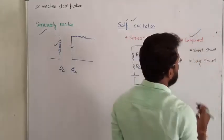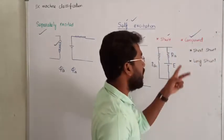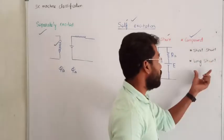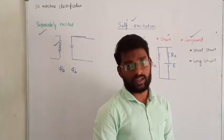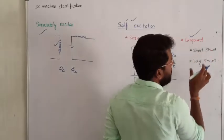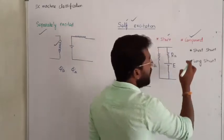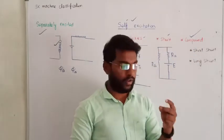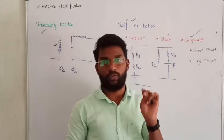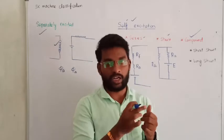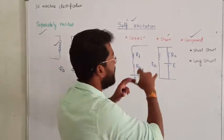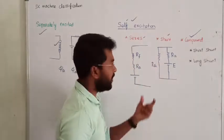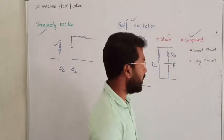Apart from this, we have one more winding that is called compound. Under compound, we have two types: short-shunt compound and long-shunt compound. In case of compound, we have two types of windings — series winding and shunt winding — that is the combination of series winding and shunt winding. It is called the compound design.